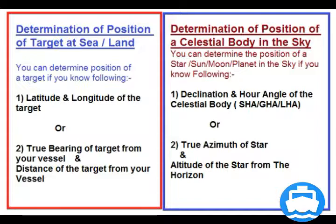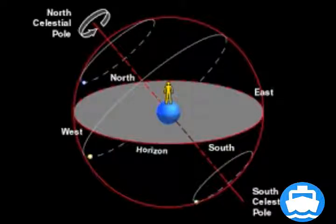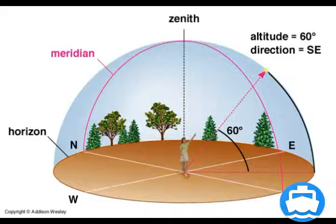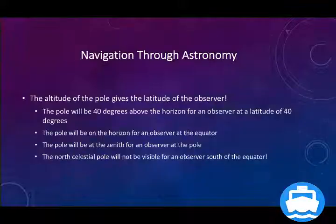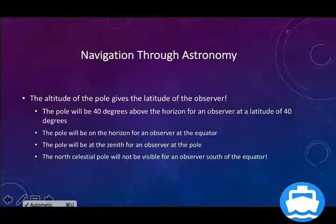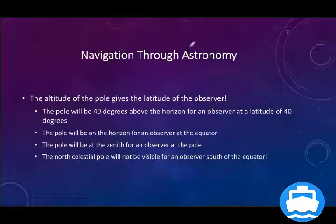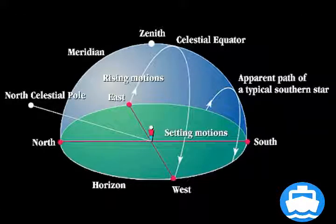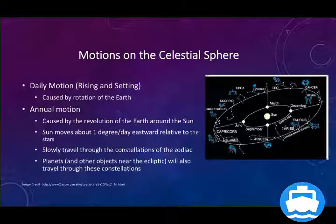Seamen use two methods for the same purpose. To determine position, we must determine the azimuth and altitude of a star. Calculating azimuth and altitude makes what is known as celestial navigation. We use various tables such as the nautical almanac and methods like spherical trigonometry. Just as latitude and longitude of a place do not change on Earth, the declination and SHA of stars do not change in space.